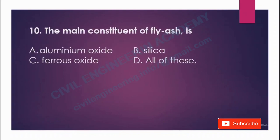The main constituent of fly ash is: A) aluminum oxide, B) silica, C) ferrous oxide, D) all of these. Option D is the answer, all of these.